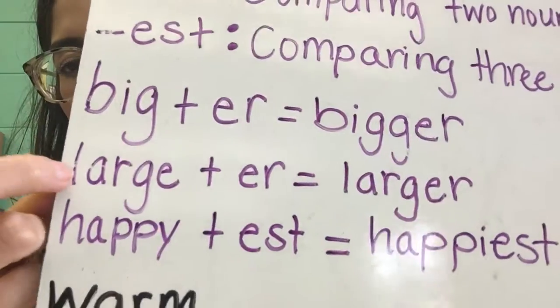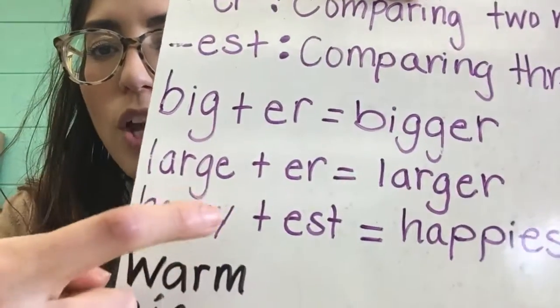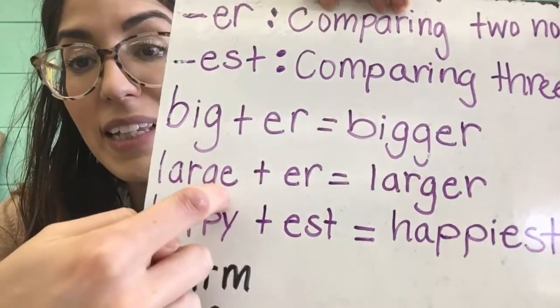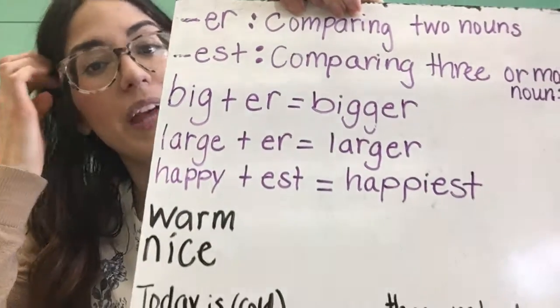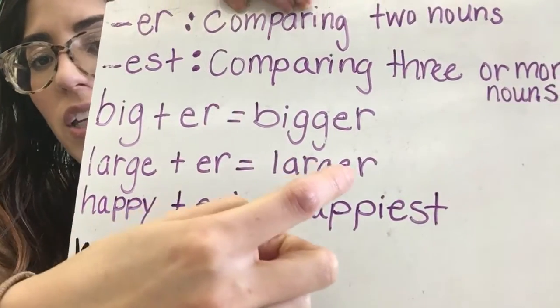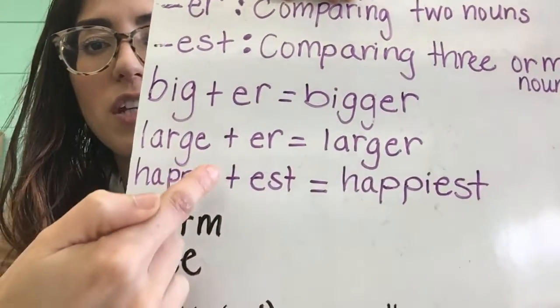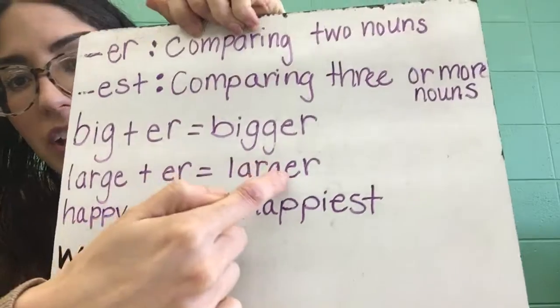The second rule: when a root word ends with a silent E, you drop the E before adding a suffix that begins with a vowel. For example, large plus -er equals larger. You drop the silent E because you can't hear it in 'large,' then add the suffix -er. You should not have L-A-R-G-E-E-R with double E's — make sure you drop that silent E before adding your suffix.